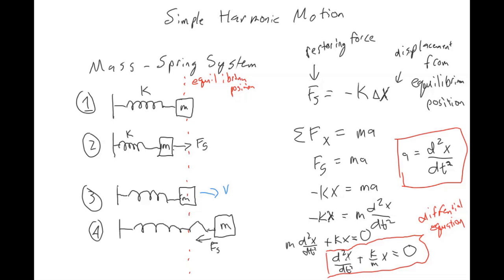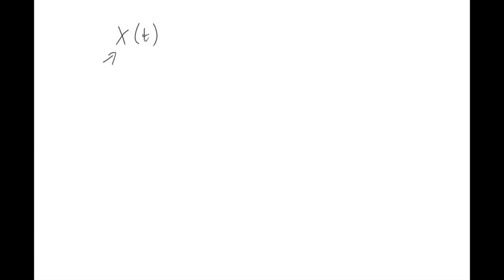The solution to this differential equation — in broad strokes, we have a second derivative of position with respect to time and another term that has position X in it. Solving this differential equation means finding an equation for X as a function of time, which is position as a function of time. The simplest solution is going to be either a sine or cosine — we'll use cosine.